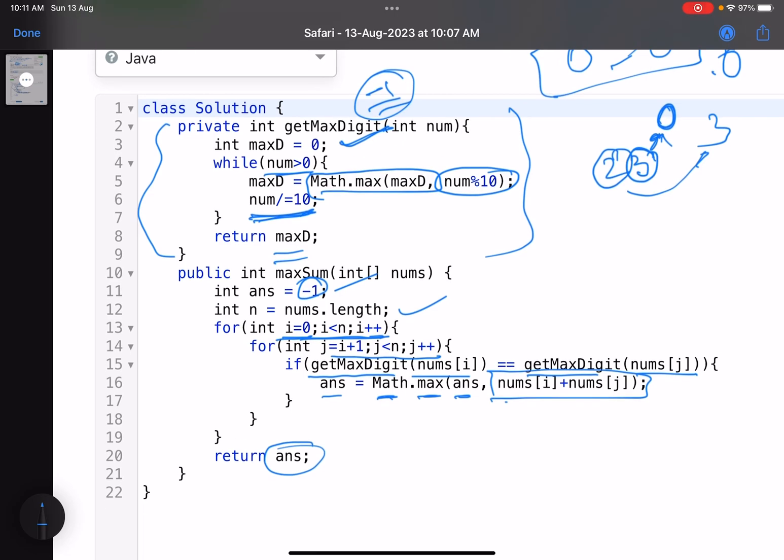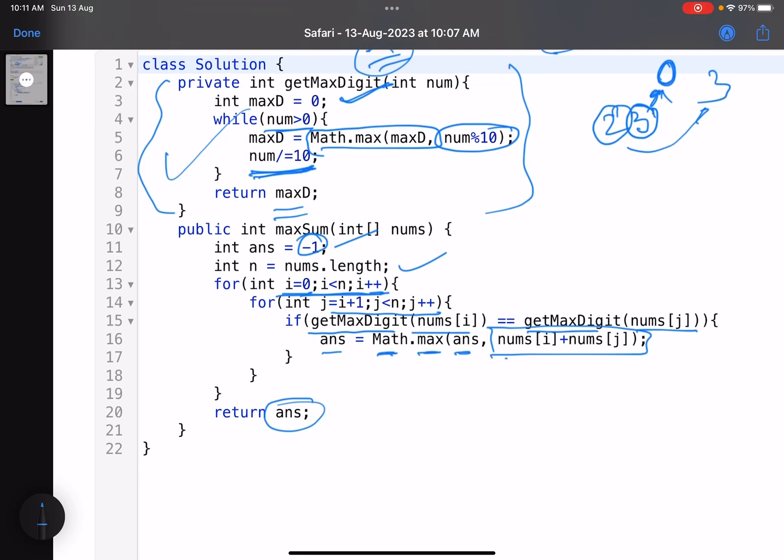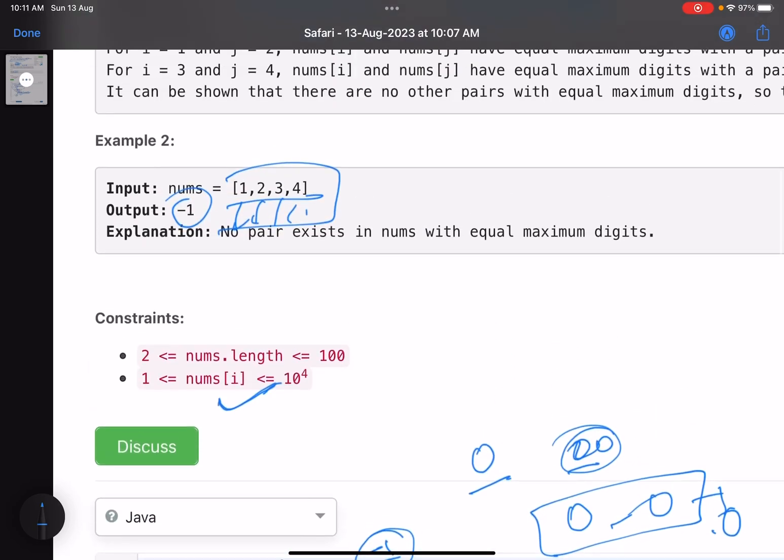Basic stuff. So this is how we find the maximum digit and just compare max digits of two numbers. If they are equal, you update your answer because obviously any sum of any pair will be greater than minus one. Finally return that answer. So yeah, that's it for this solution.